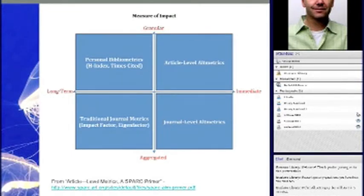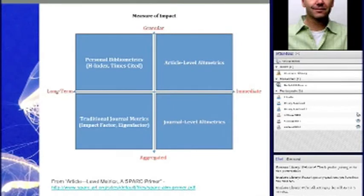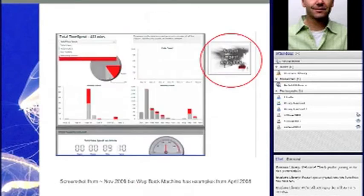There's a grid from a SPARC primer on article-level metrics. You can draw a grid between long-term metrics — traditional citation metrics that take 6, 12, or 18 months to build up — through to immediate metrics like usage, tweets, and Facebook likes. And whether they're granular, looking at literally the article or individual person level, versus aggregated at the journal, university, or country level.